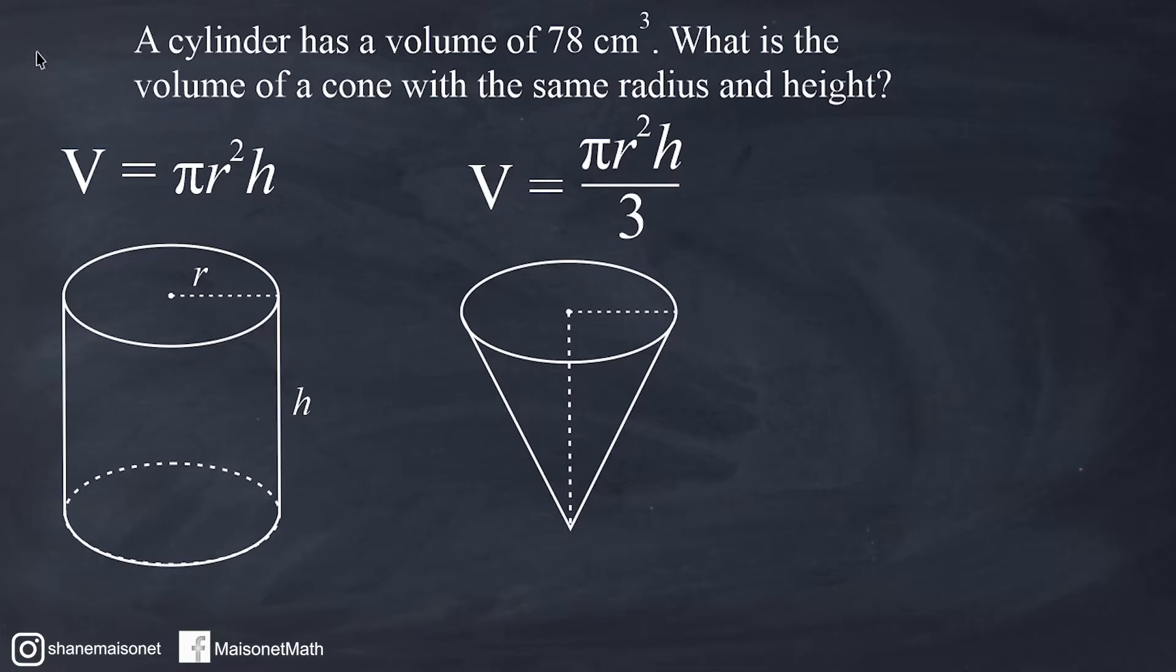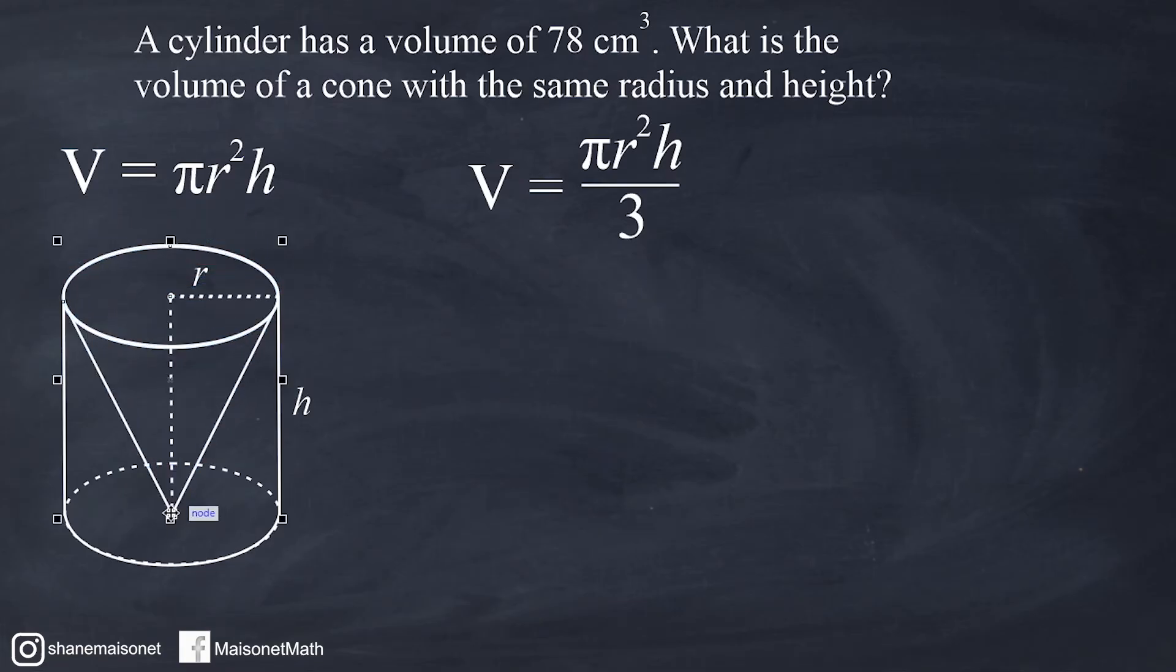Let's take a look at this cone that we have to find the volume of. It's said that this cone has the same radius and height as the cylinder that has a volume of 78 cubic centimeters. If we take this cone and drag it over to our cylinder and superimpose the figures, notice that they have the same radius length and the same height.